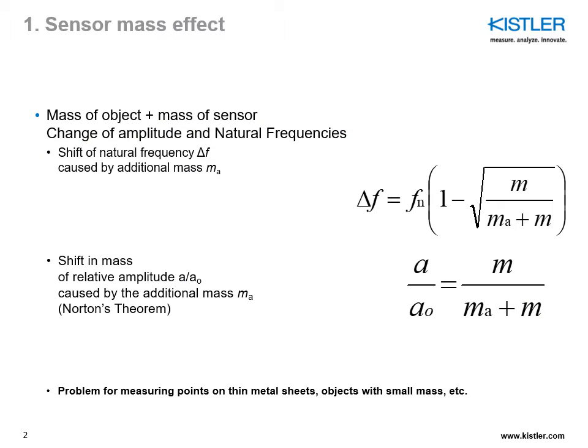The first topic we're going to address is the sensor mass effect. You want to understand how much your sensor is going to influence the behavior of the structure under study. The dynamic properties of a structure are dependent on its mass, rigidity, and damping, as well as the way the sensor used for measurement is being attached to it. If the mounting of an accelerometer applies some additional mass to the structure, these dynamic properties can change.